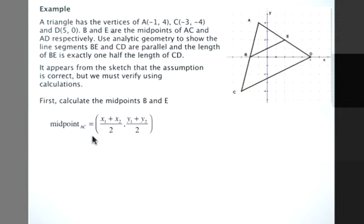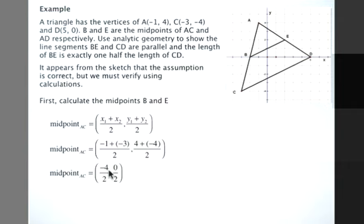The midpoint of AC is given by our midpoint formula. We substitute in x1 is negative 1, x2 is negative 3, y1 is 4, y2 is negative 4. Negative 1 plus negative 3 is negative 4, 4 plus negative 4 is 0. When we divide each by 2, we get that the midpoint of AC is negative 2, 0.